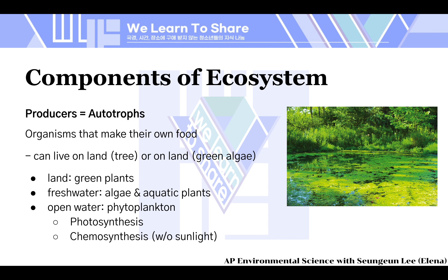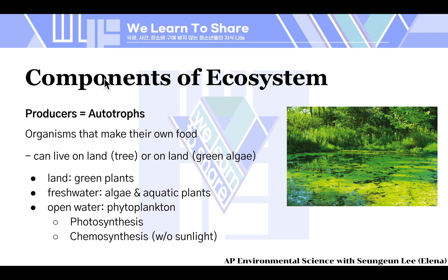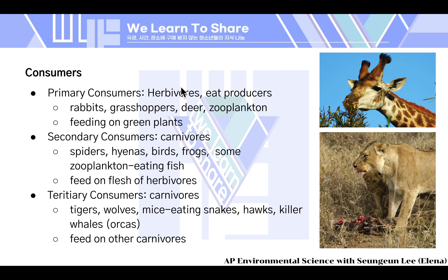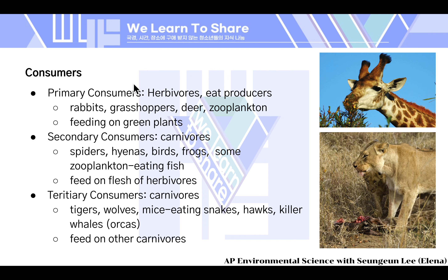Another component of the ecosystem is consumers. We have three types. First is primary consumers, which are herbivores — they eat producers. It's important to distinguish: primary consumers like rabbits, grasshoppers, deer, and zooplankton eat green plants, but those green plants produce their own food through photosynthesis. Primary consumers just eat green things. They feed on green plants, which are producers.